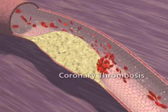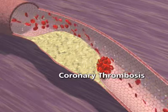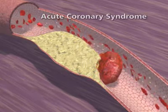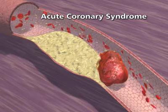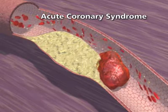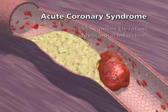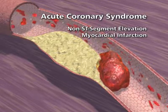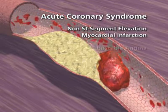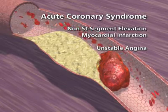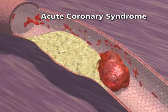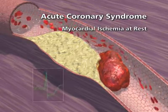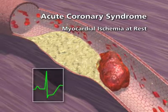When a thrombotic occlusion is subtotal, an acute coronary syndrome develops, and there are two types. The first type is known as a non-ST segment elevation myocardial infarction, and the second type is known as unstable angina. With these syndromes, the patient experiences chest pain at rest and the electrocardiogram shows ST segment depression.